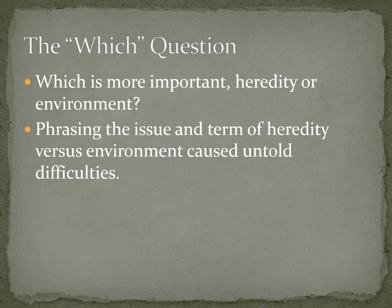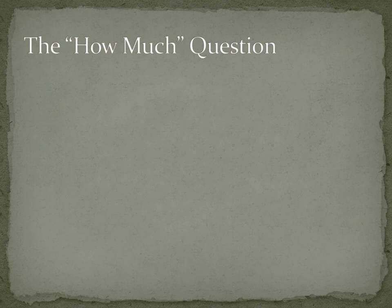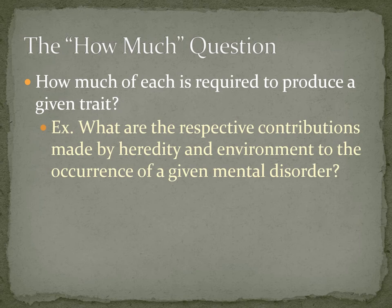After answering the which question, scientists now question the how much question. As scientists came to recognize the inappropriateness of the which question, some reformulated the issue, granting that both Heredity and Environment are essential for the emergence of any characteristic. They asked how much of each is required to produce a given trait — for example, what are the respective contributions of Heredity and Environment to the occurrence of a given mental disorder?